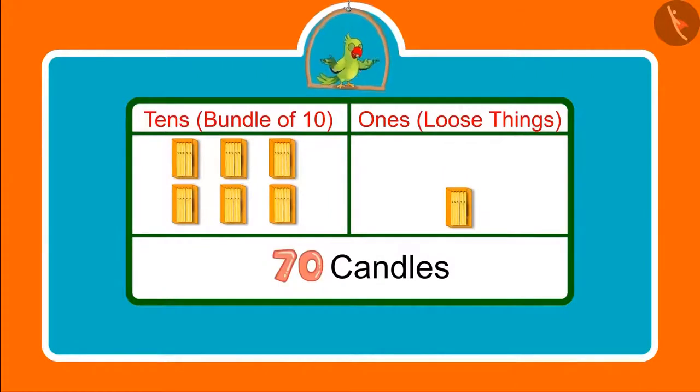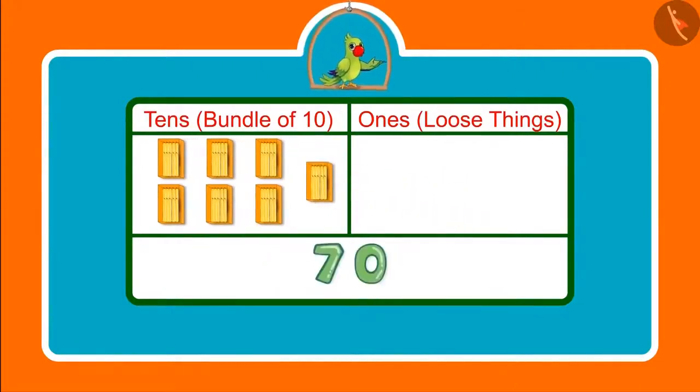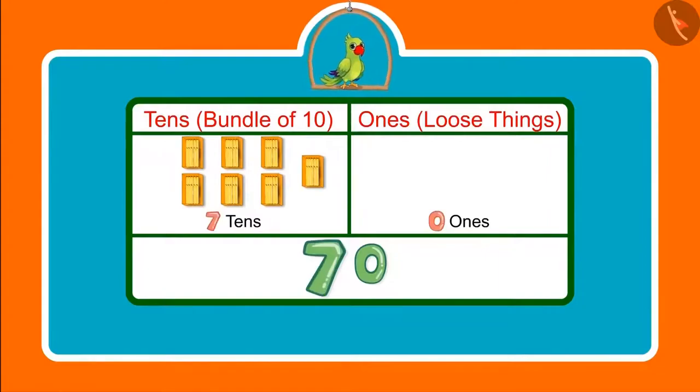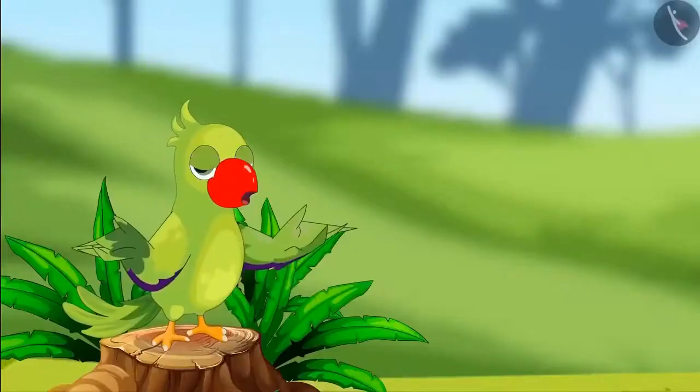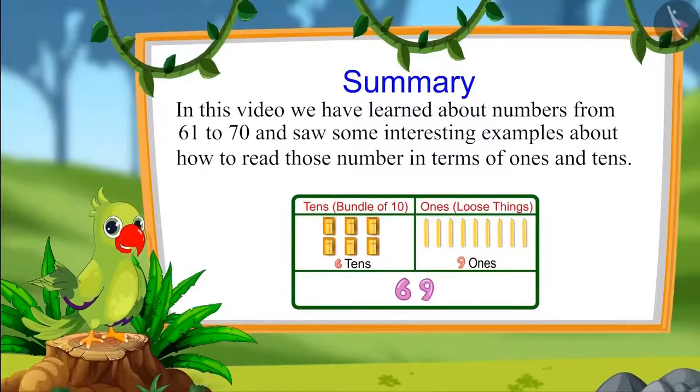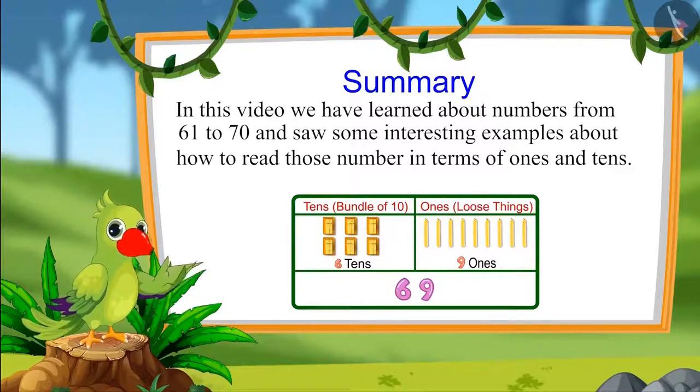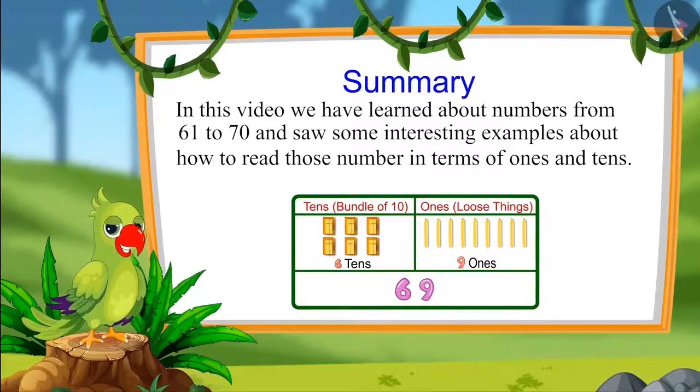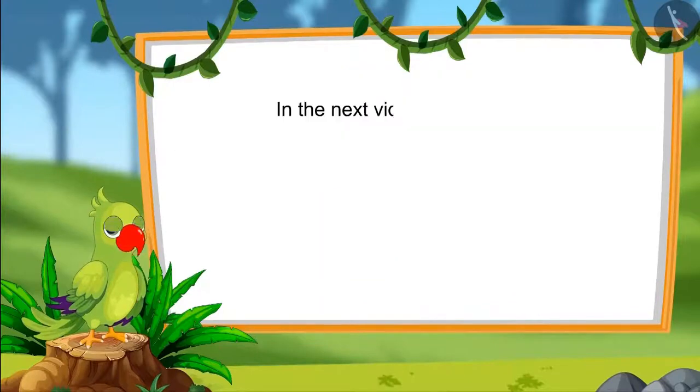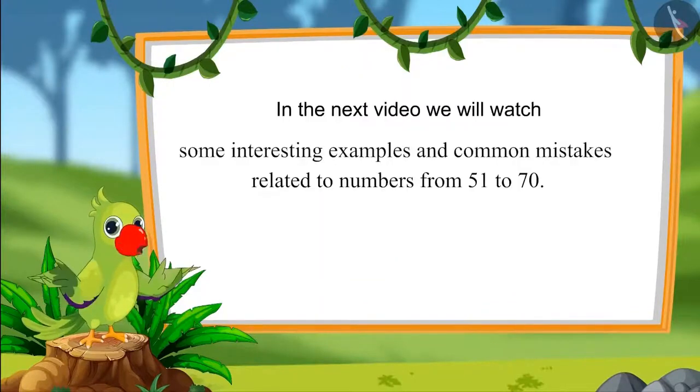After 6 groups of 10 candles, they would have got 1 more bundle of 10 candles. This means 7 tens. That was all for today, children. In this video, we have learnt about numbers from 61 to 70 and saw some interesting examples about how to read those numbers in terms of ones and tens. In the next video, we will see some interesting examples related to numbers from 51 to 70 and discuss some common mistakes that we should avoid. Until then, bye, children.